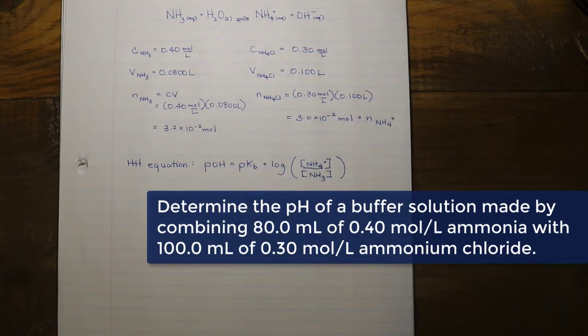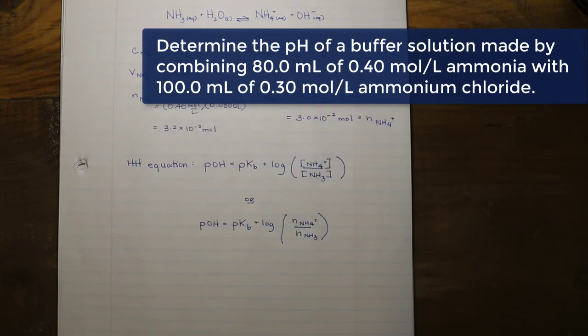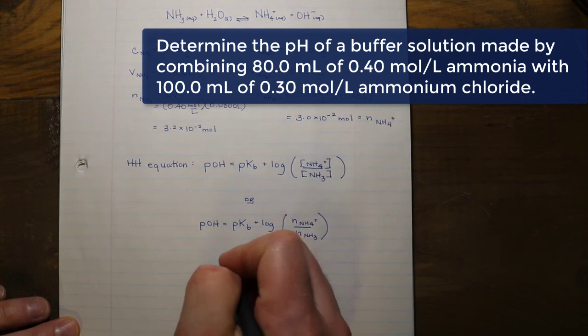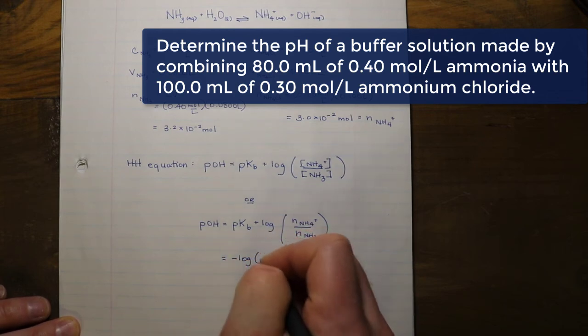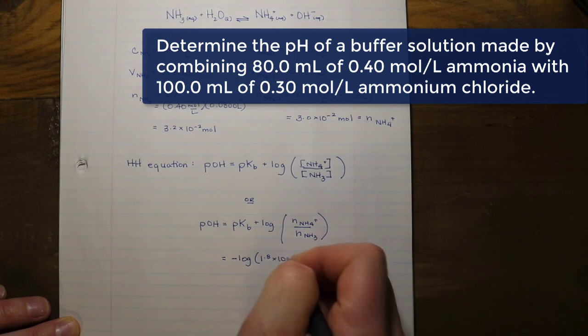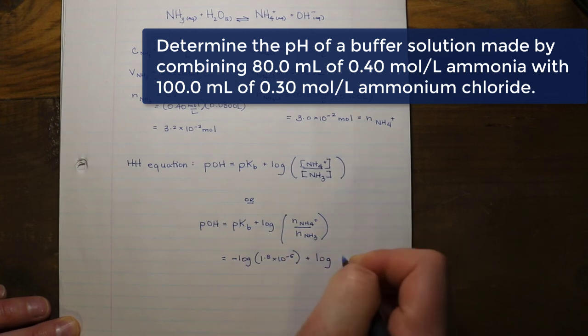One of the first questions students have is, what is pKb? And the answer is, just think about it as the pH. The pH is the negative log of the hydrogen ion concentration or hydronium ion concentration. The pKb is the negative log of the Kb. So the Kb of our base in this case is 1.8 times 10 to the negative 5, because our weak base is ammonia. We are going to be using the negative log of the Kb of ammonia in our calculation.